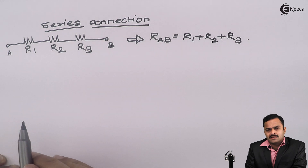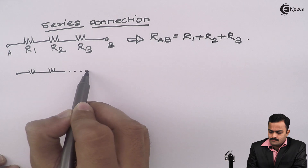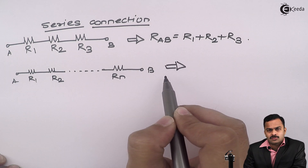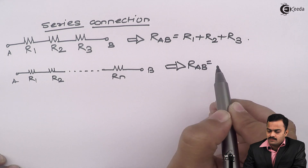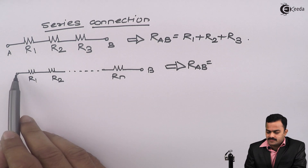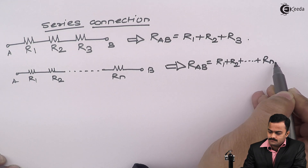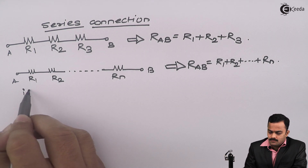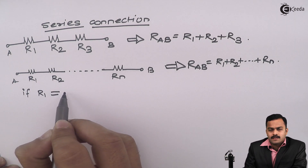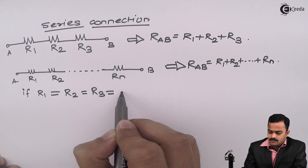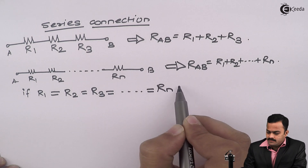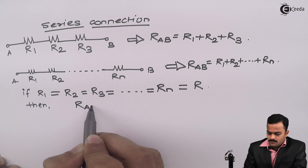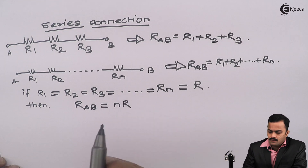Suppose I am having n number of resistors connected in series, then obviously the equivalent resistance for this series combination will be nothing but the addition of all the resistors connected between points A and B. Suppose I am having all the resistors of the same value, which is nothing but r, so if R1 is same as R2 is same as R3 is same as Rn, which is nothing but r, then I can say the equivalent resistance will be n into r.